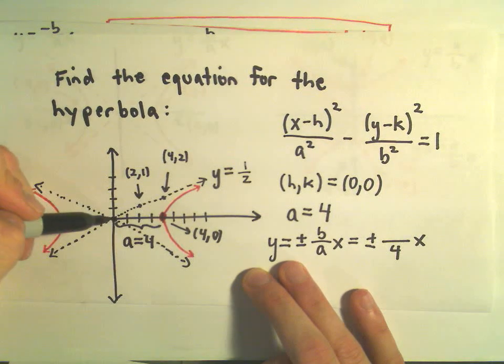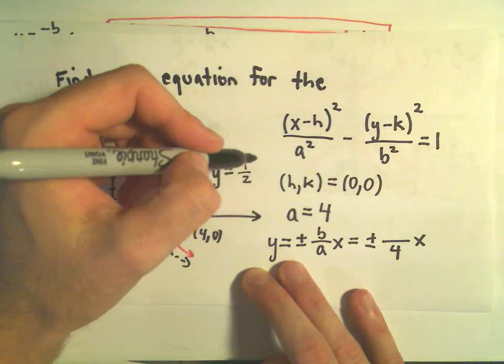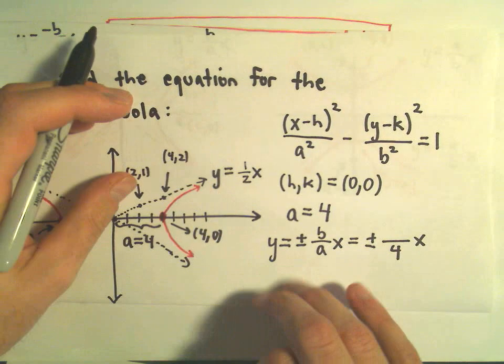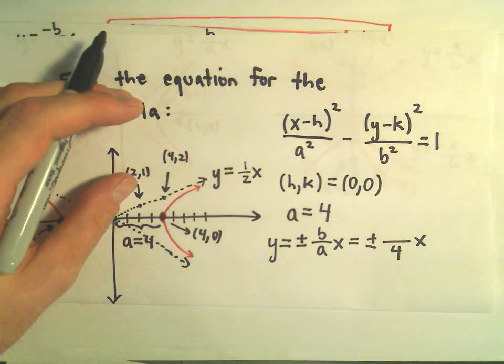Okay, so again, up 1 over 2, up 1 over 2. So our slope is a positive 1 half. So our asymptote is going to be 1 over 2x.